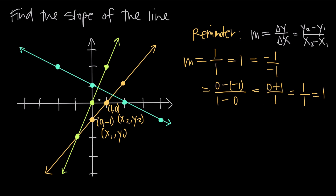Let's do a couple more examples. Looking at the green line, we have the point (0, 0) at the origin, and also the point (1, 2) — out 1 along the x-axis and up 2 along the y-axis. The slope m is therefore 2 minus 0 over 1 minus 0, which is 2 over 1, or just 2.